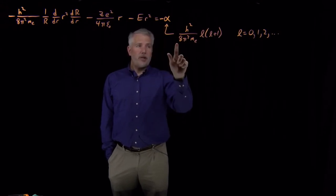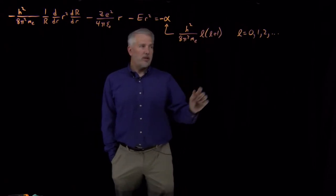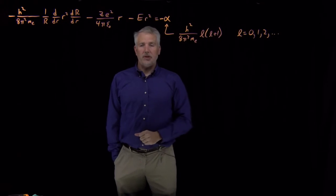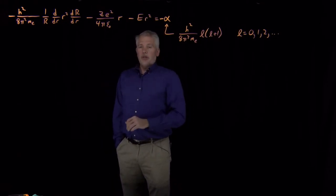And this alpha, the value of alpha, turned out to be this collection of constants multiplied by a quantum number. And again, from what we know about rigid rotor, we know that the value of L could be any non-negative integer. So that's what we have here is this radial function.